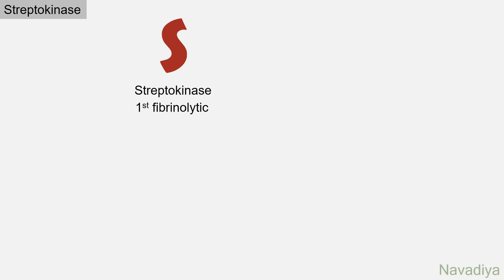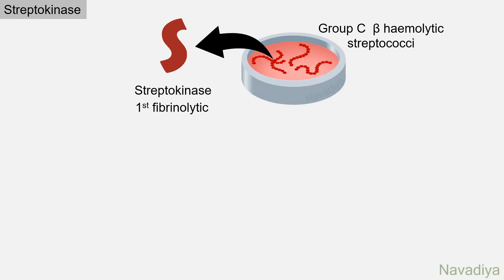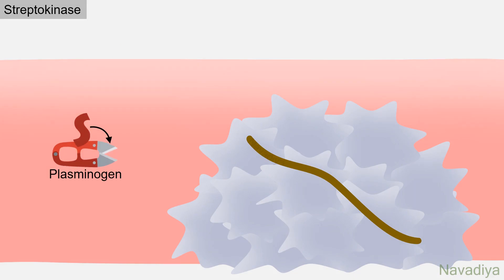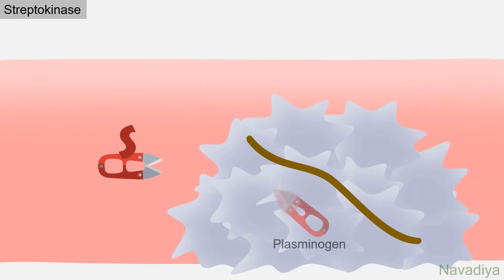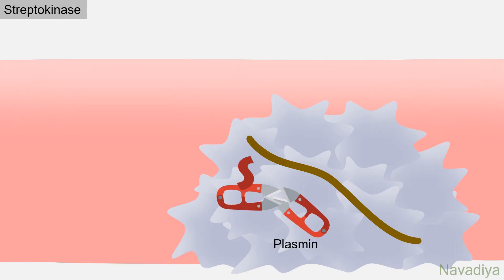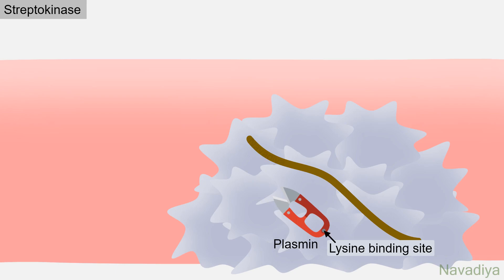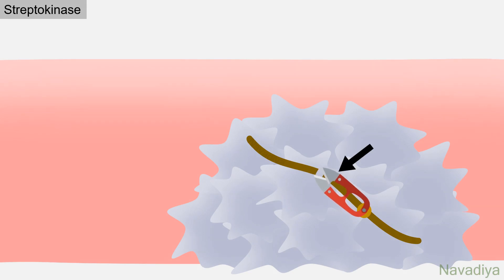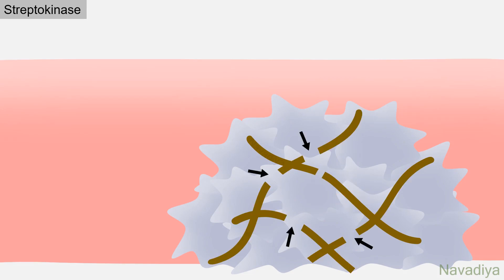Let's see streptokinase first. It is the first fibrinolytic drug to be used clinically. It is obtained from group C beta-hemolytic streptococci. It is given by intravenous route. In blood, it binds with plasminogen and induces conformational changes that expose its active site. This complex then activates other plasminogen molecules to plasmin. Plasmin has a lysine binding site and fibrin has lysine residues. Plasmin binds these residues and, through its catalytic site, cuts the fibrin strand, leading to clot dissolution and restoration of blood flow.